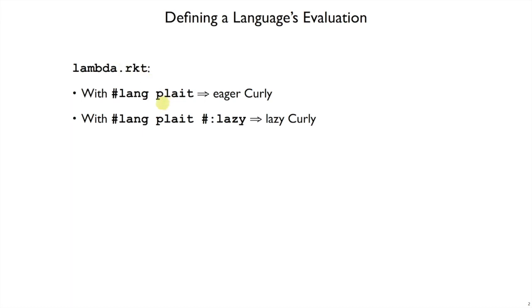We've seen how lambda.racket, when run in regular eager plate, gives us an eager version of the curly language. Well, if we run lambda.racket in lazy plate, then we get a lazy version of curly.